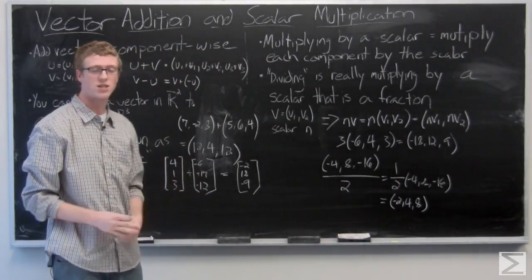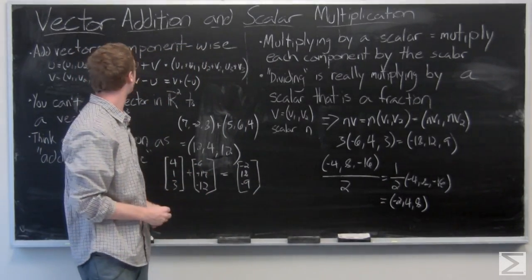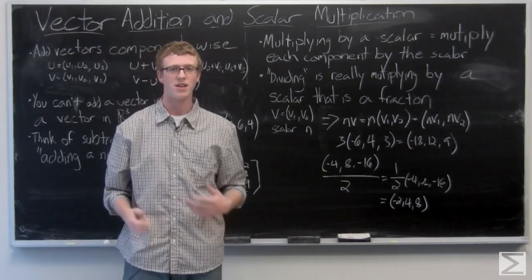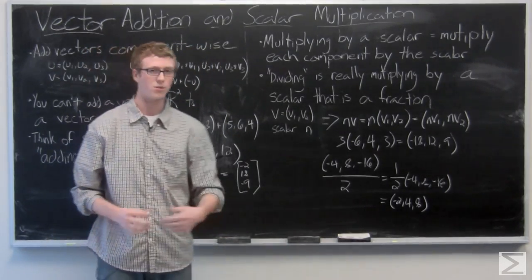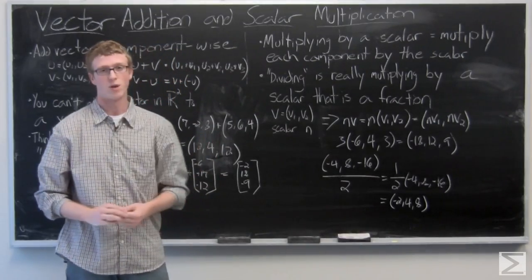So those are the basics of scalar multiplication and vector addition. They do have some properties that we didn't go over, but those are very simple and they follow along with the definition of these properties.